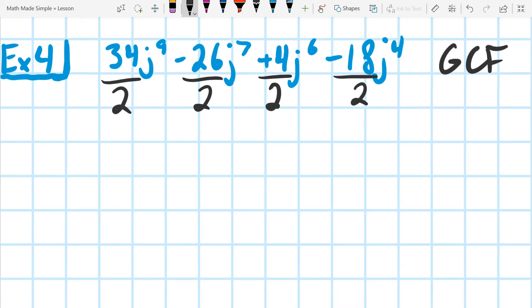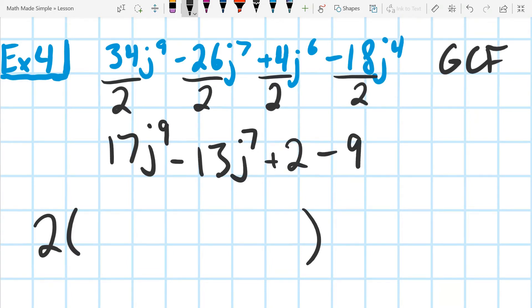So that leaves us with 2, and it looks like actually that 2 would be the greatest common factor. Don't get bogged down. Some people will try to factor each of them, like the 34, the 26, but we only need to focus on the smallest one. So I'm going to go ahead and simplify this just by taking that 2 out. I know I'm going to have 2 and then something, but let me just simplify this. I have 17j to the 9, and 13j to the 7. I'm keeping the negative there because it was a negative. Plus that 4 becomes a 2, minus the 18 becomes 9. So I double-checked that I copied down all of my j's.